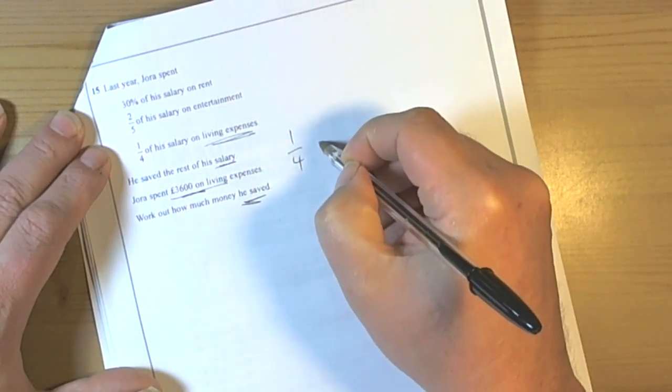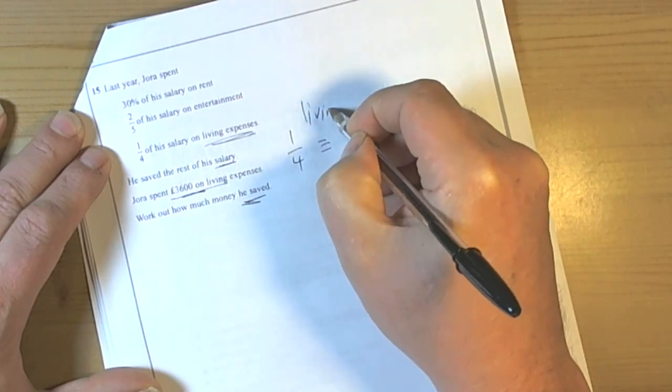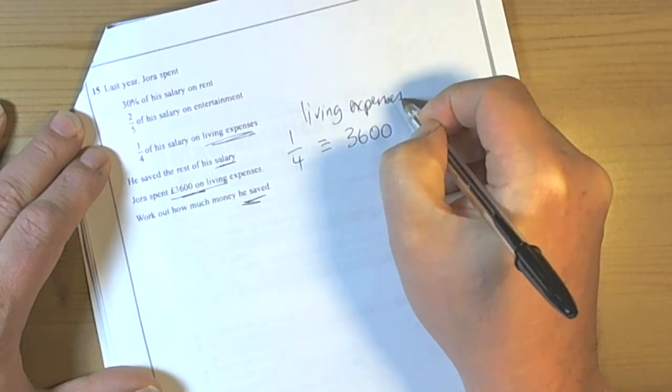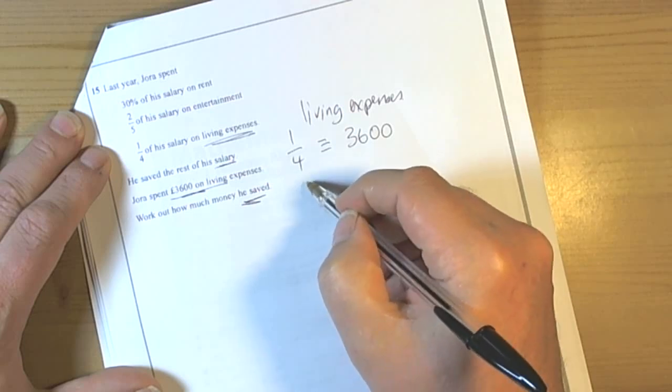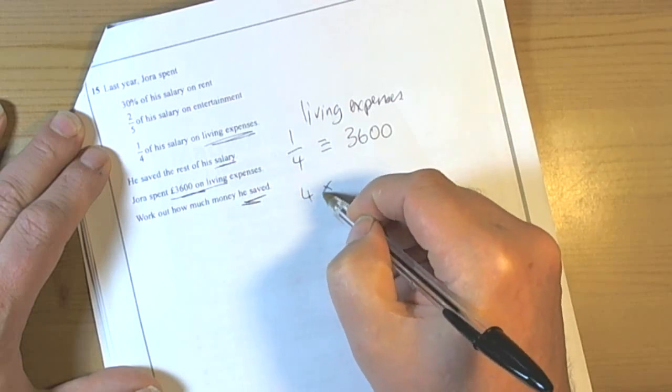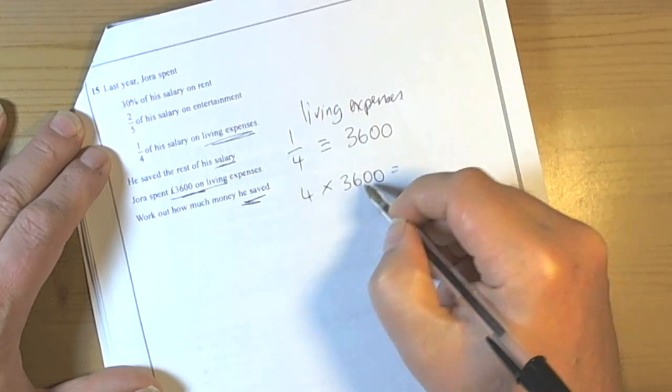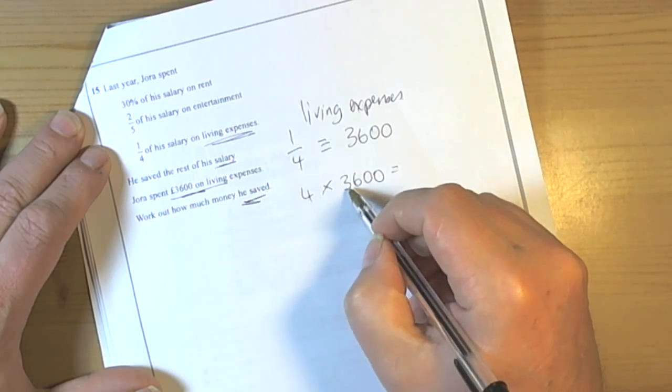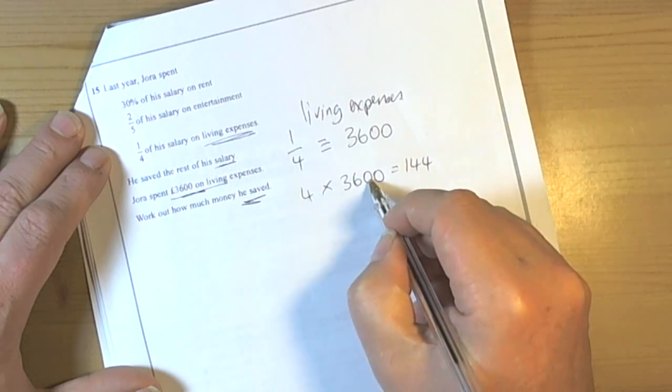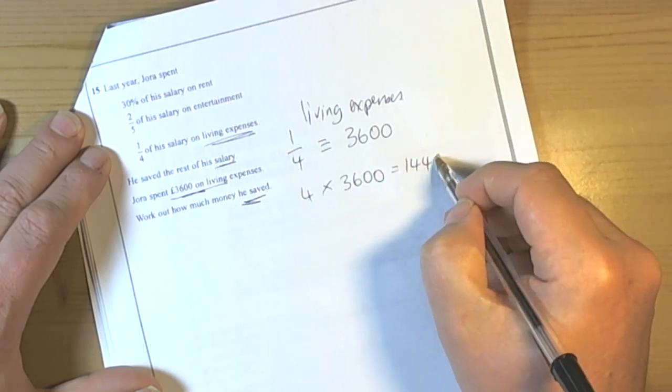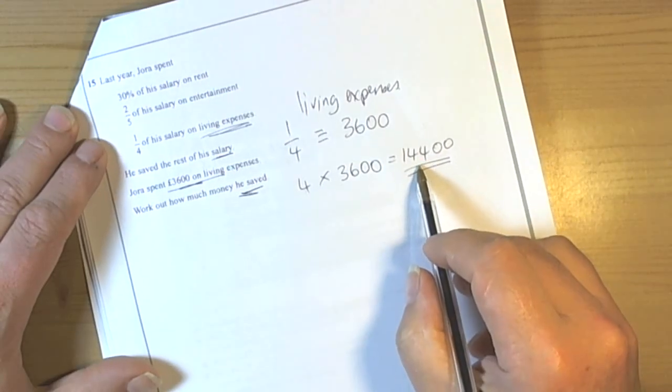So we know that a quarter is equivalent to £3,600, so this is for the living expenses. And if a quarter is £3,600, then the whole salary must be 4 times that amount. Each quarter being the same value: £3,600, 4 of them in a whole. So when we do this sum, 4 times 36 is 144, and then we've got the two zeros to multiply it by 100, so move this up twice as well, so £14,400. So that gives us the salary for the year.